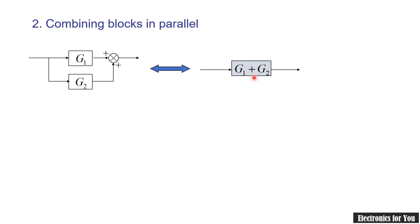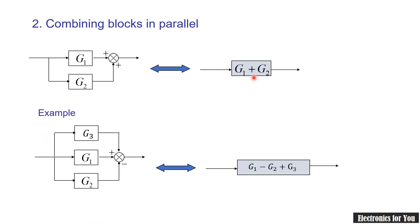For example, consider three blocks G1, G2, and G3 connected in parallel. The sign of G1 is positive, G2 has a negative sign, and G3 is also positive. Then the resultant output will be G1 minus G2 plus G3.